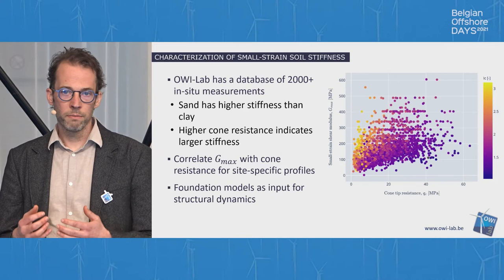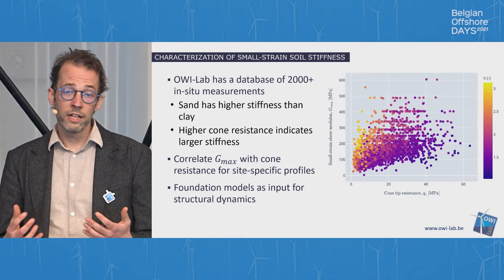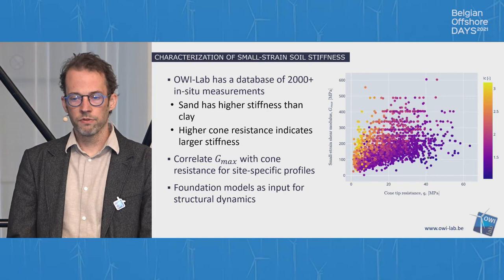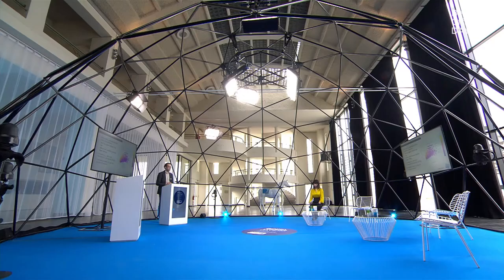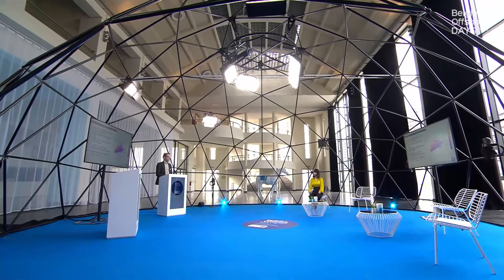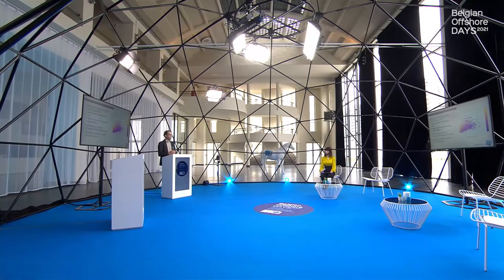The cone tip resistance is captured at every location and is relatively cheap to obtain. At OE Lab we now have a database of over 2,000 small strain stiffness data points that can be correlated with cone tip resistance. We can see that clays generally have smaller stiffnesses than sands, and higher cone resistance indicates larger stiffness. There is still scatter in those correlations, but overall the cone tip resistance is a good proxy for calculating the Gmax property. With Gmax available at every foundation location, we have the necessary input for structural dynamics models.